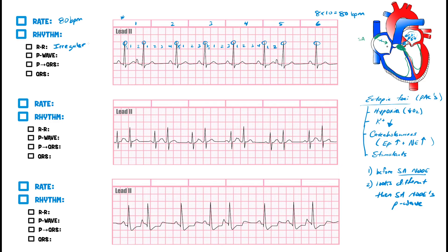Remember, there aren't many irregular rhythms. The main one is A-fib. Others include these ectopic rhythms like PACs, PVCs, and multifocal atrial tachycardia. This is one of them.